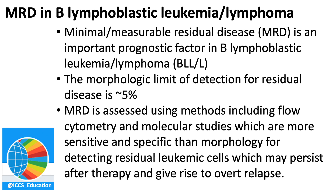When it comes to morphology, the limit of detection for residual disease is about five percent. So you can tell when there are five percent or greater abnormal blasts present in a marrow with your eyes by morphology. But MRD is assessed using methods including flow cytometry and molecular studies, which are not only more sensitive than morphology but also more specific, allowing you to separate a regenerating hematogone from a leukemic blast which may give rise to relapse.